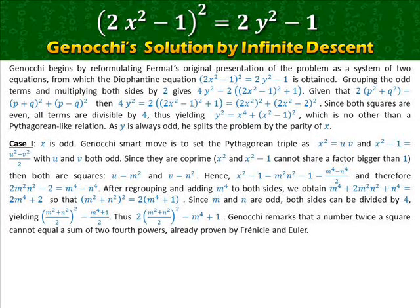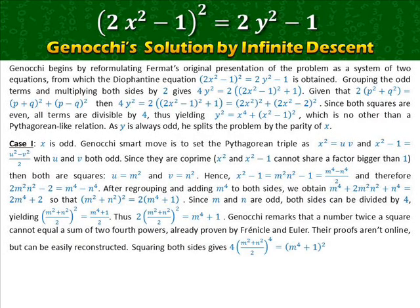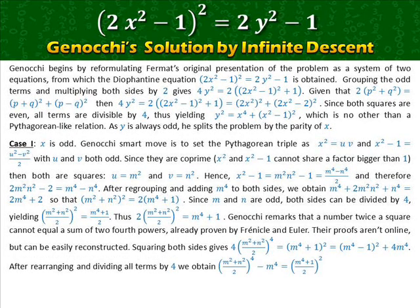The proofs are not online but can be easily reconstructed. Squaring both sides gives 4·((m² + n²)/2)⁴ = (m⁴ − 1)² + 4m⁴. After rearranging and dividing all terms by four, we obtain a difference of fourth powers equal to a square.